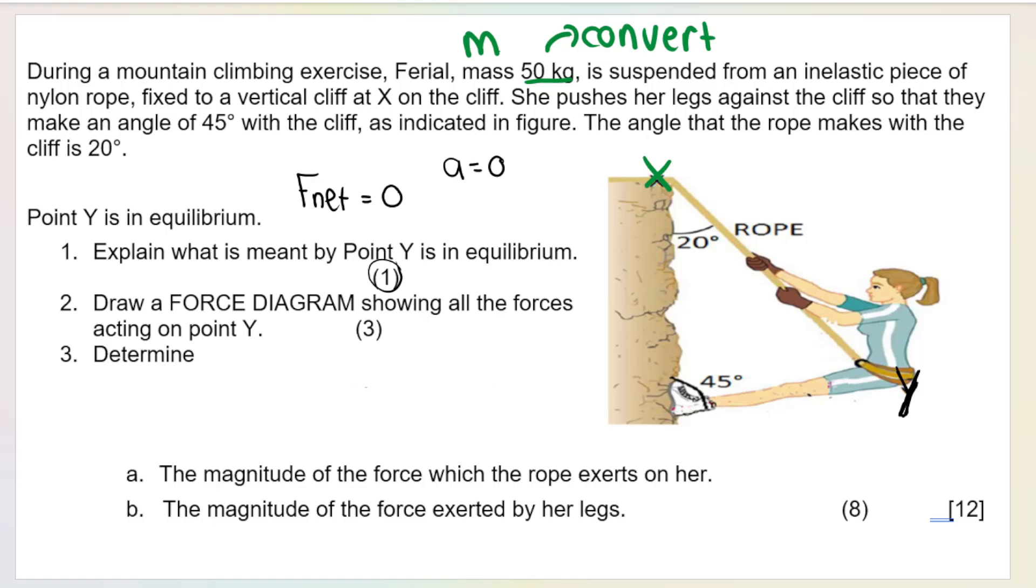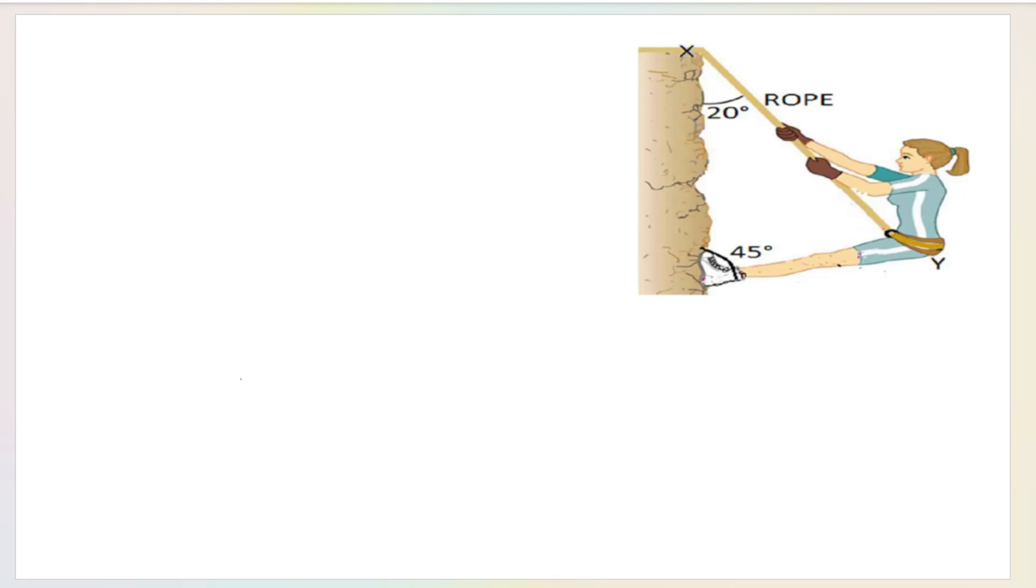The question says draw a force diagram showing all the forces acting on point Y. A force diagram is my closed triangle of forces, my closed vector diagram. It's not a free body diagram, don't get them confused. Let's start with what forces are acting at point Y. We know that her weight is acting downwards, pushing her downwards. Then we've got the force of her legs.